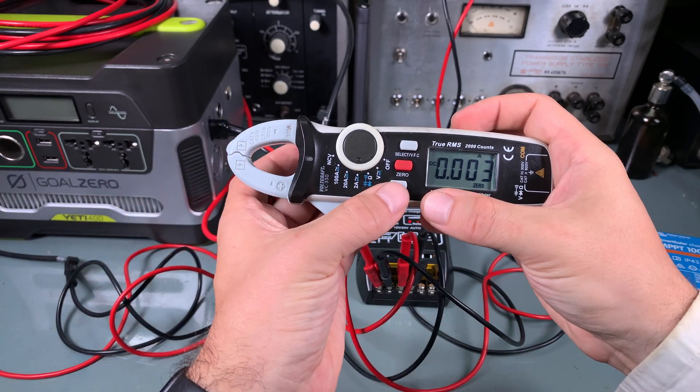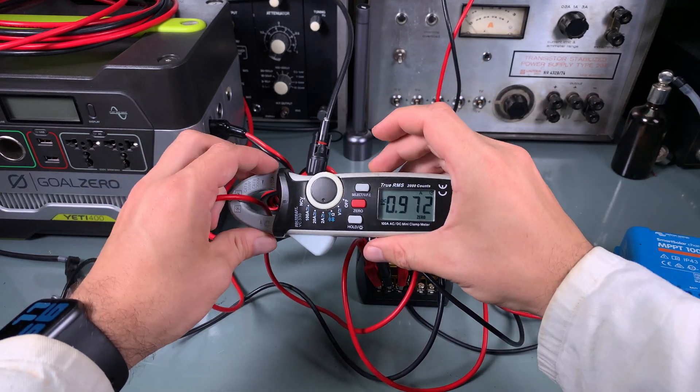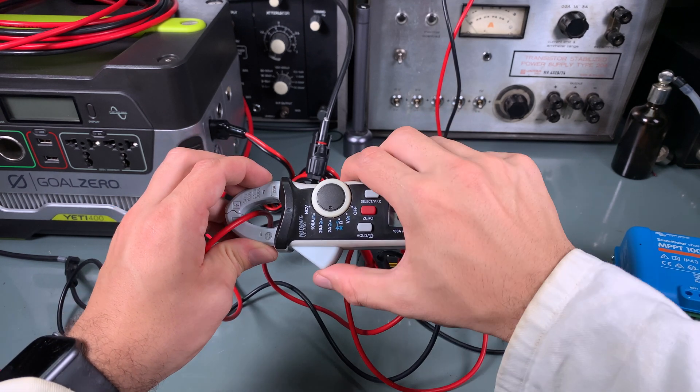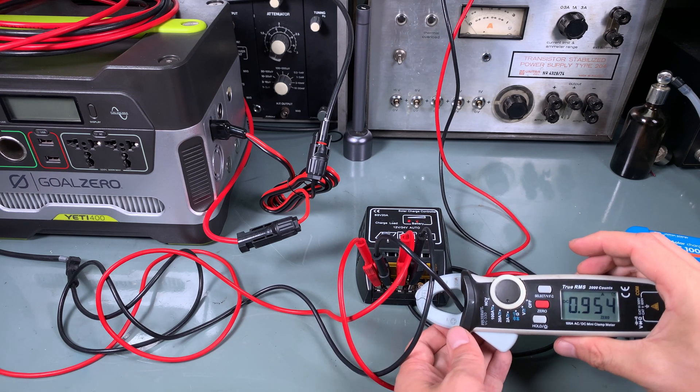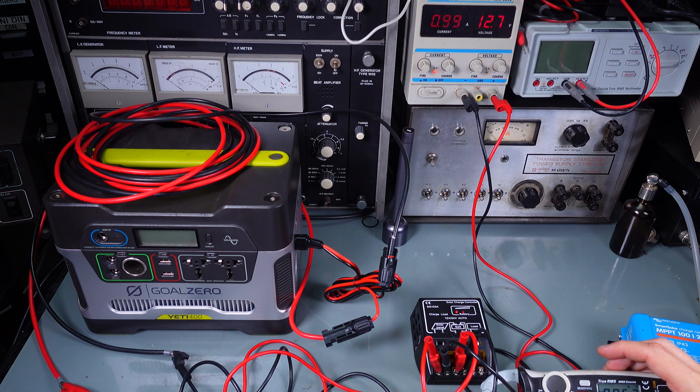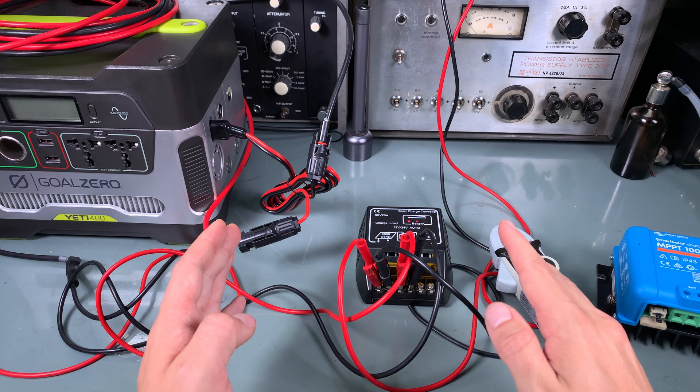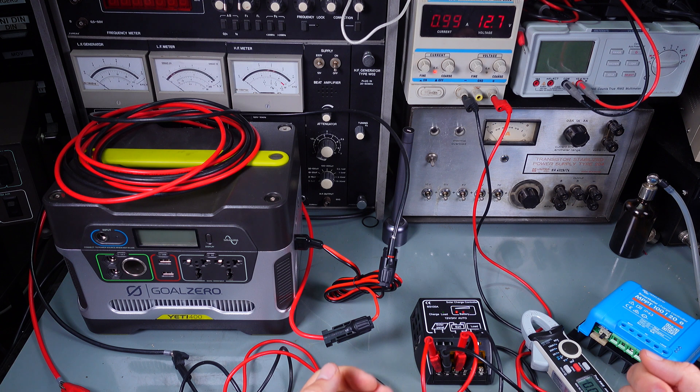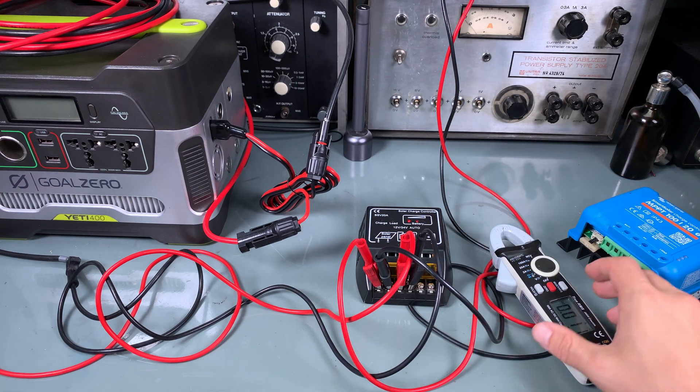If I'm going to grab my clamp meter to the DC the power going into the Goal Zero is around one amp and the current from the power supply is exactly the same. So we've got a conversion one to one. So currently we are losing 15 watt of power that can be used for recharging our battery.